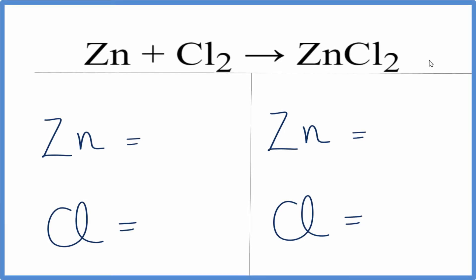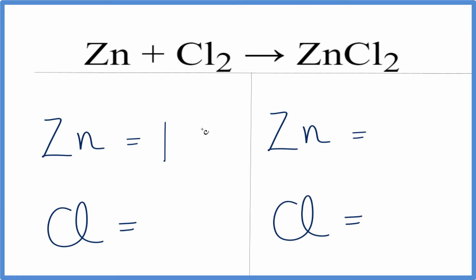To balance the equation zinc plus chlorine gas yields zinc chloride, we'll add the atoms up on each side of the equation. We have one zinc — there's actually a one here, but we don't write it by convention — and then we have two chlorine atoms.